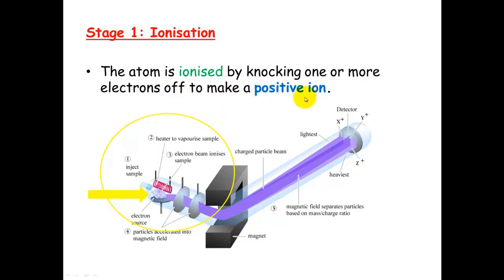And generally we're only trying to knock off one electron to make it a positive one ion. So here you can see there's an electron source. They fire these electrons into the sample and it knocks off electrons to give a positive ion. So now we've got a charged ion, and this stage is called ionization.